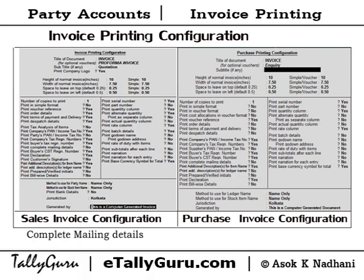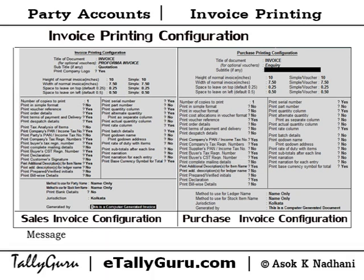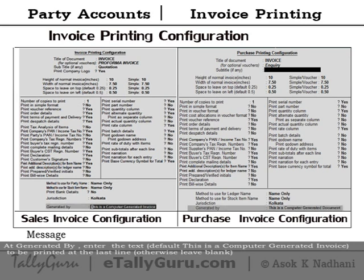Complete mailing details. At print complete mailing details, set yes to print details of all the components of mailing details such as postal address, email address, phone, etc. Set no to print as per the option set at report title. At the generated-by field, enter the text — default: 'This is a computer generated invoice' — to be printed at the last line. Otherwise leave blank.